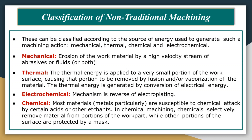Non-traditional machining processes are classified according to the source of energy used to generate the machining action. There are mainly three groups: mechanical, thermal, and electrochemical/chemical. In mechanical energy based processes, erosion of work material is carried out by a high velocity stream of abrasives, fluids, or both. In thermal energy based processes, thermal energy is applied to a very small portion of the workpiece, causing removal by fusion or vaporization. In electrochemical processes, it is a reverse of electroplating where ionic dissolution occurs.